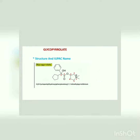Let us see how to remember its structure. Simply, its name suggests that it contains an aromatic heterocyclic ring and an ester. In glycopyrrolate, 'glyco' means sugar, 'pyrol' means five-membered aromatic heterocyclic ring, and 'ate' means ester.